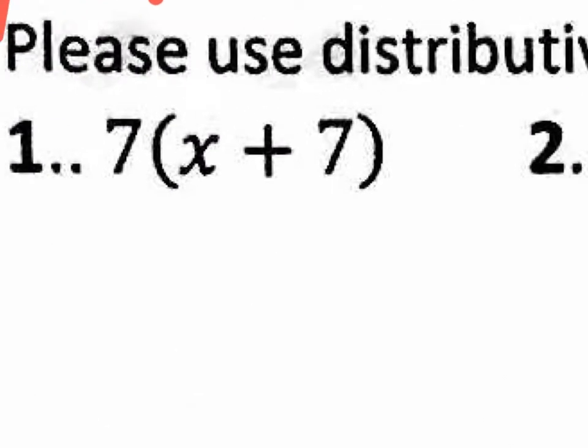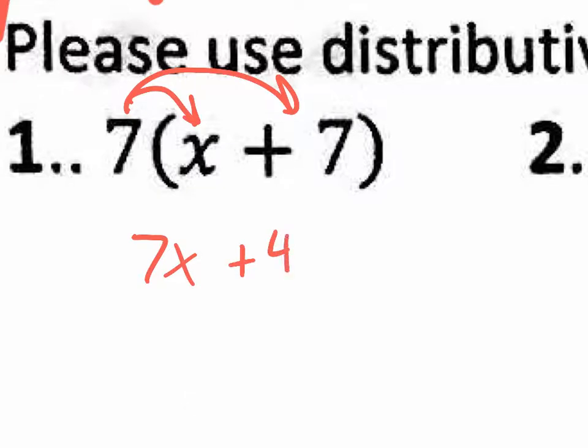Number one: I take that 7, I distribute. What do I get? 7x. And then 7 times 7? 49. Easy, right?